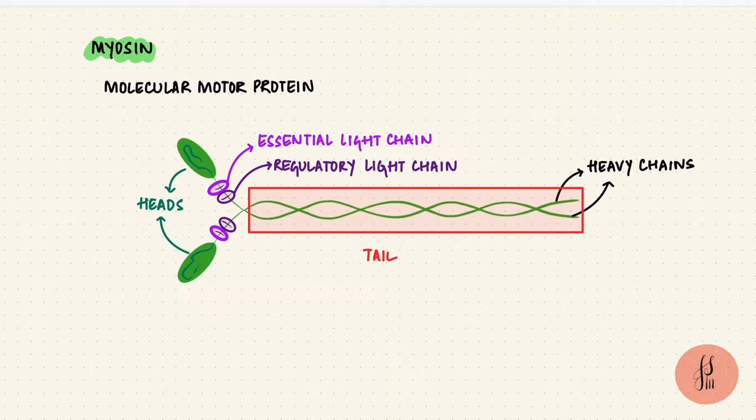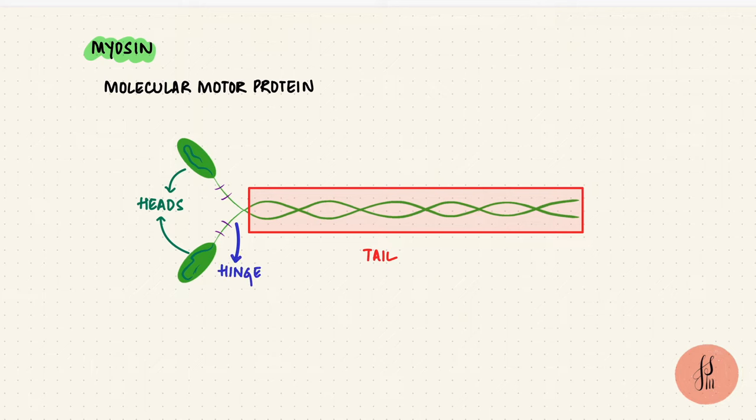In between the heads and the tail is a hinge region so that the heads can bend when they're attached to actin. That's how they pull the actin filaments inwards shortening the sarcomere.